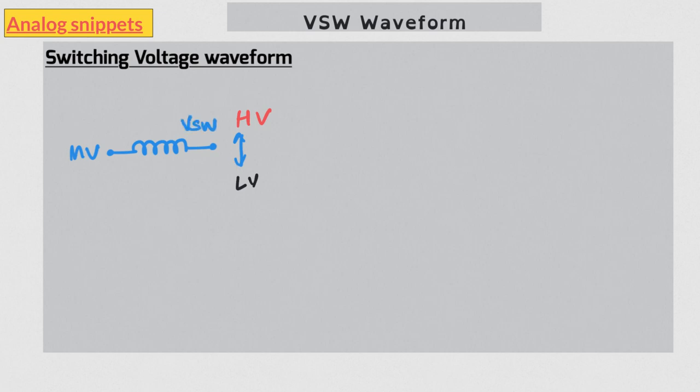Like inductor current, this switching voltage also has a simple waveform, but it has somewhat more features than inductor current. Switching voltage is connected to either high voltage or low voltage using switches. Accordingly there are two switches. In this video we will call them high side switch and low side switch.